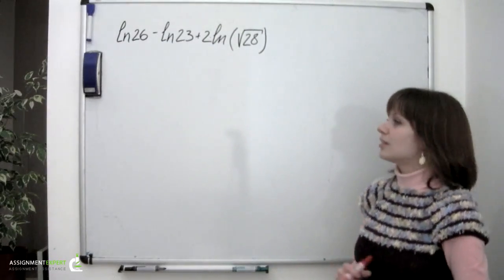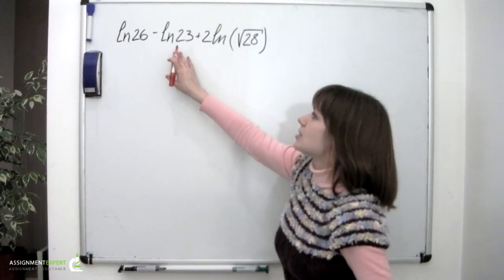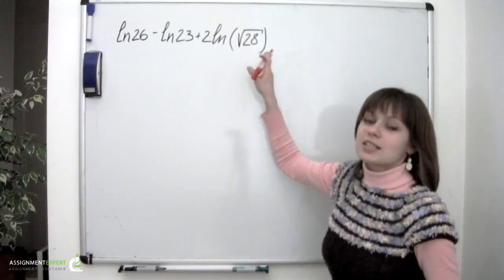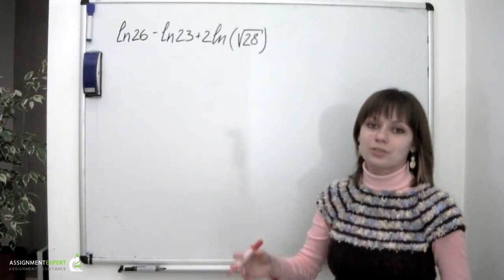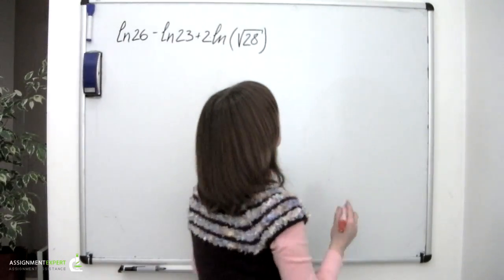Using the laws of logarithms, let us express ln of 26 minus ln of 23 plus 2 times ln of square root of 28 as a single logarithm and then evaluate it. Now to solve this problem we are going to have to recall a few formulas.